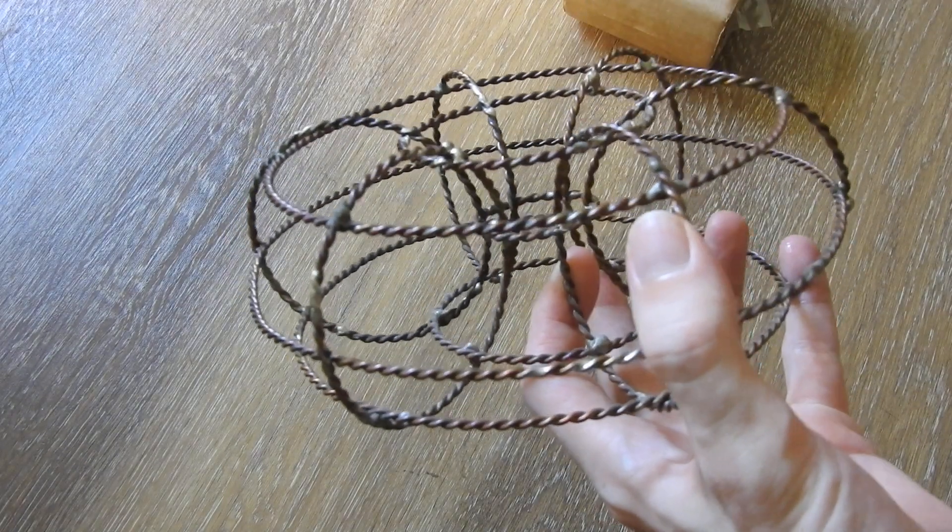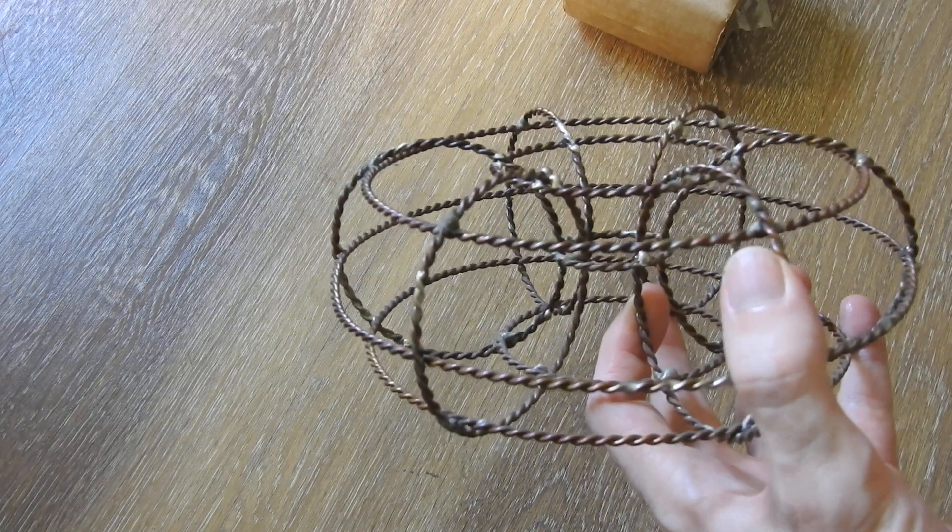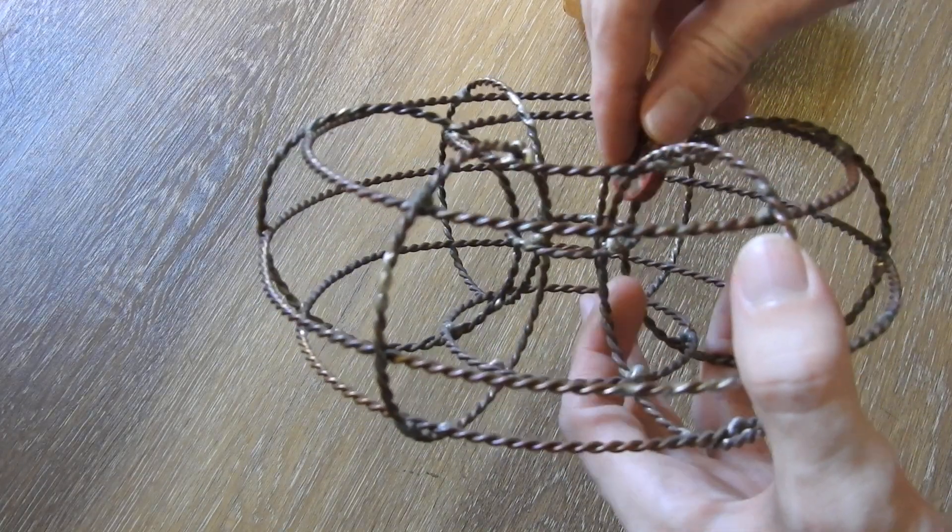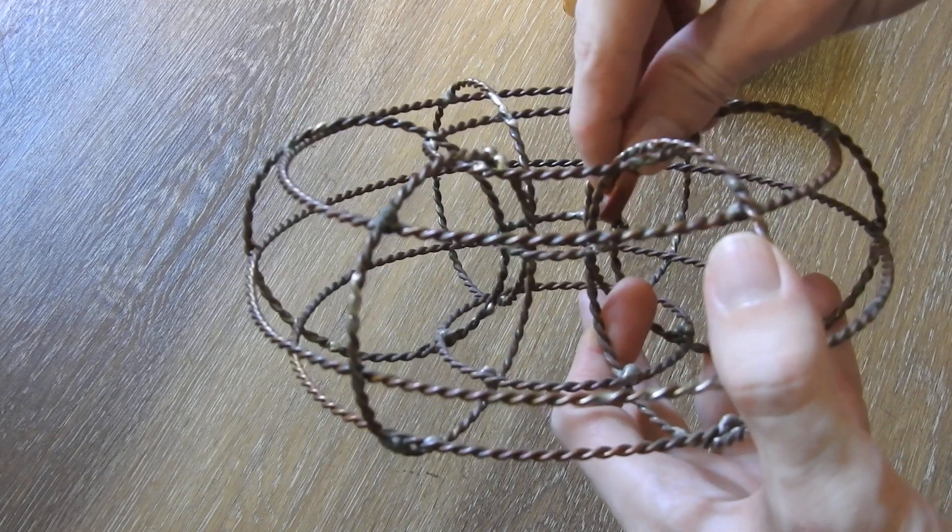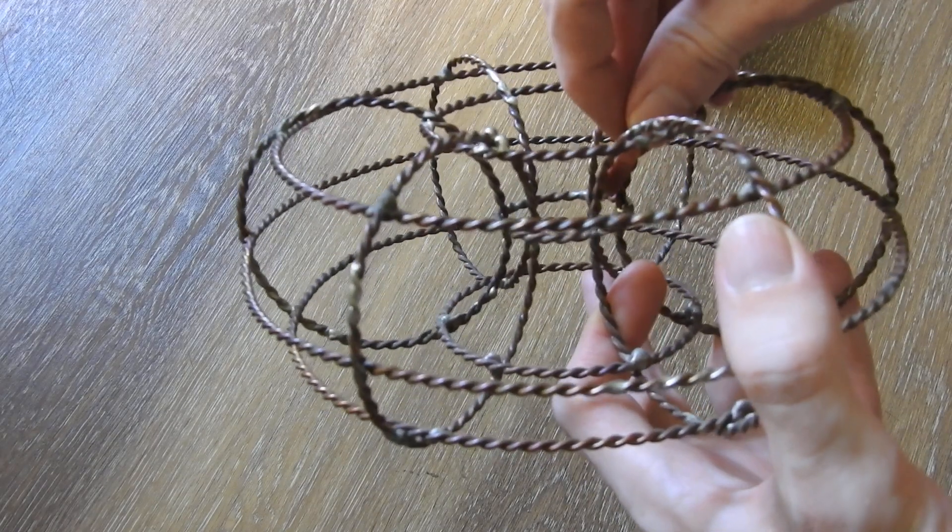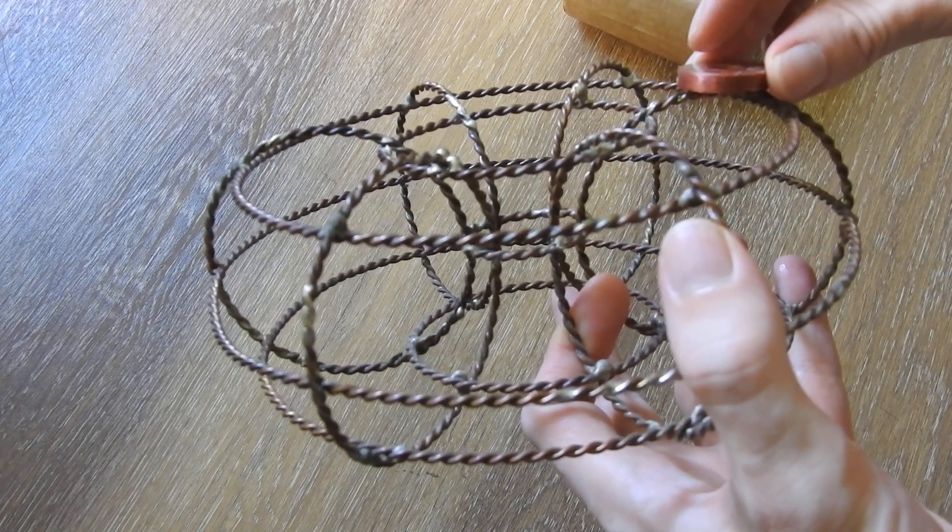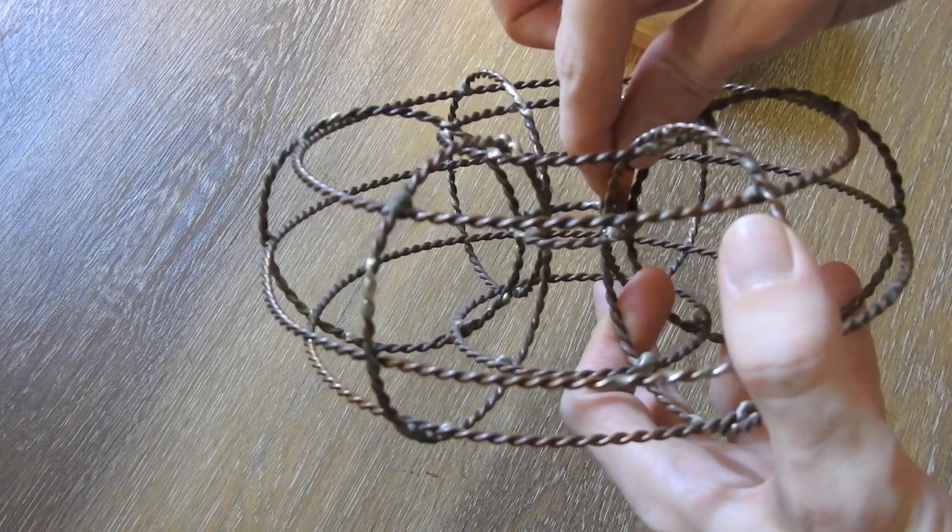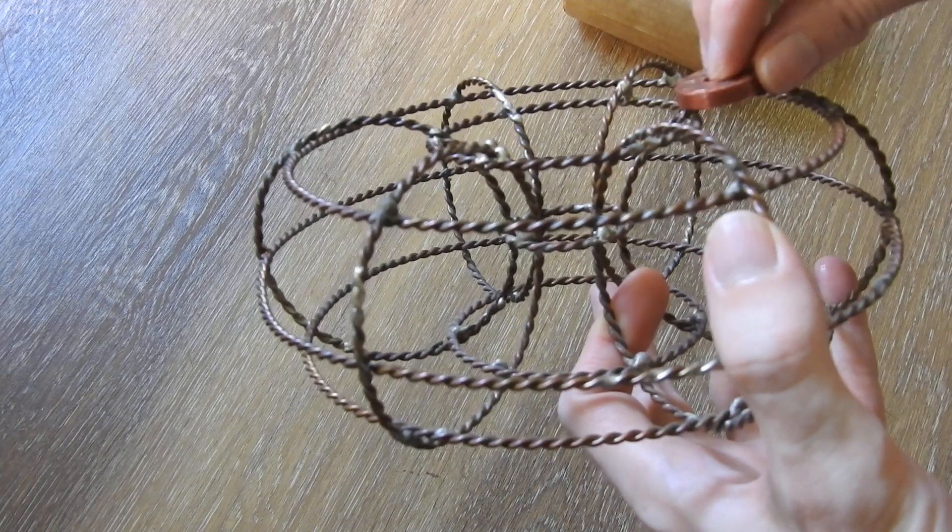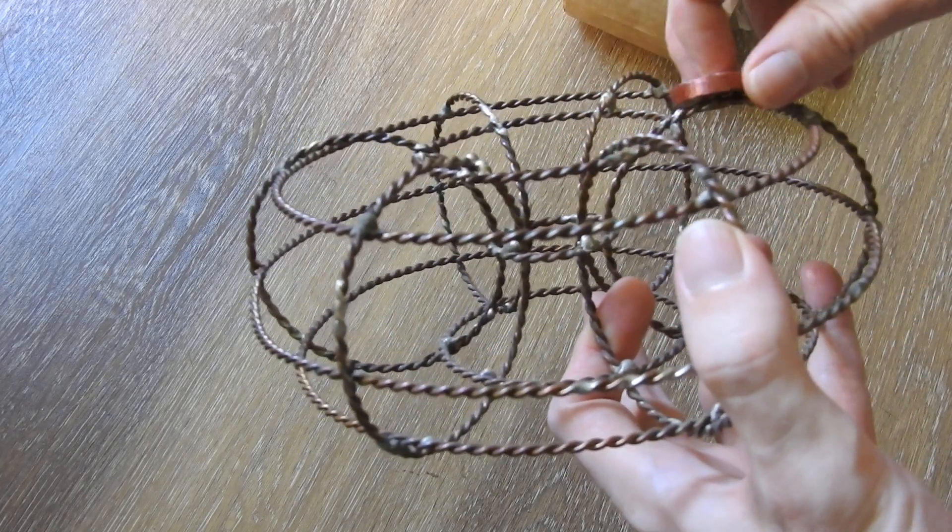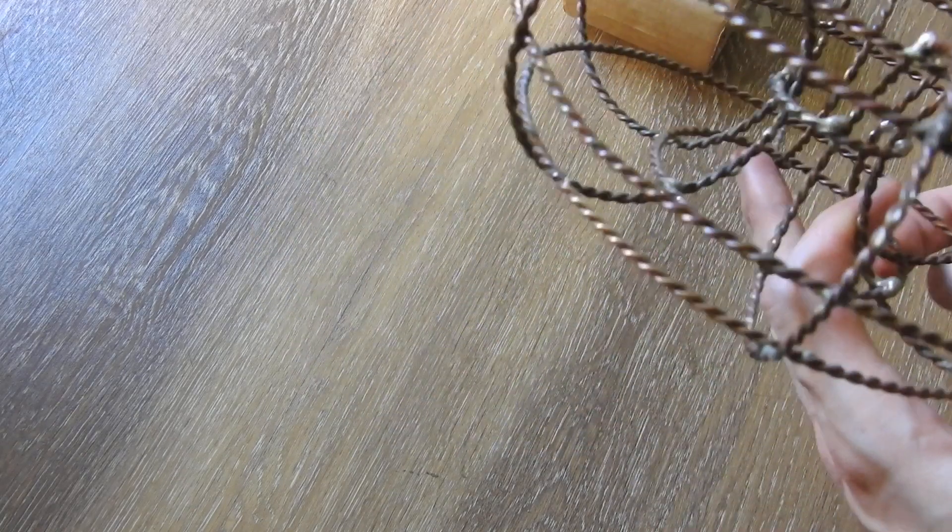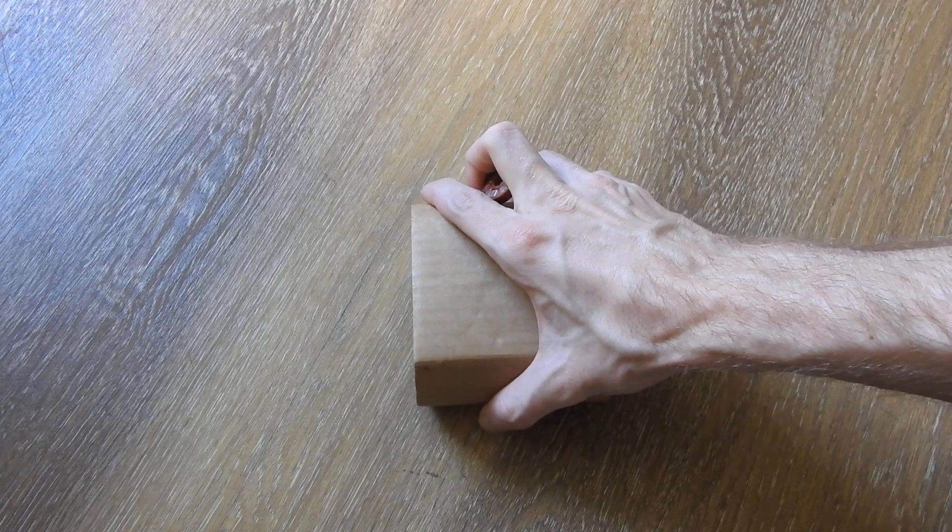I will do this with the Halbach array so you can see it better. As you could see it's in the center aligned like this, and if I go further outside it wants to align like this. This is just a demonstration to give you an idea why the magnets align like this.